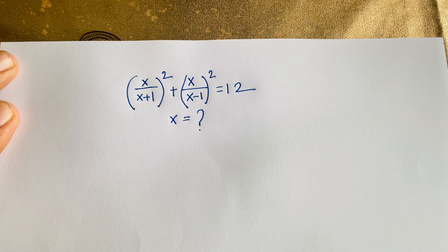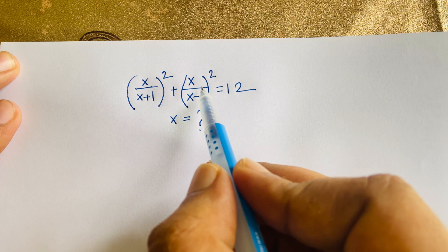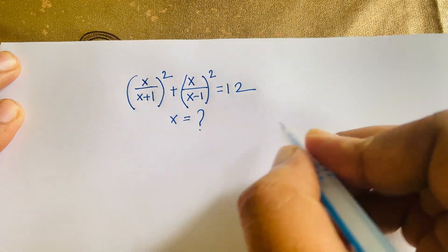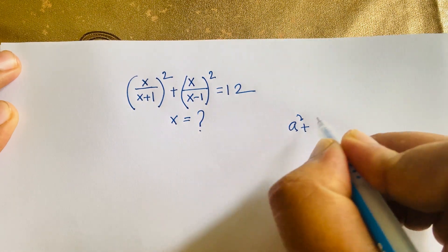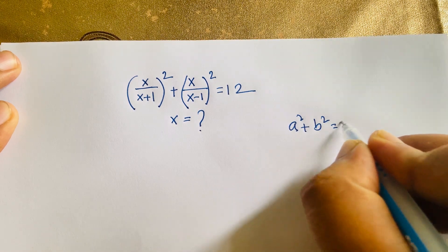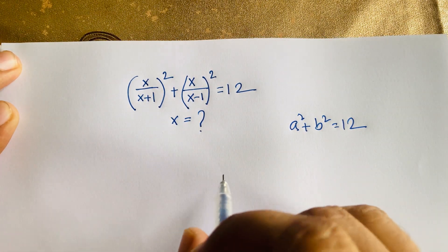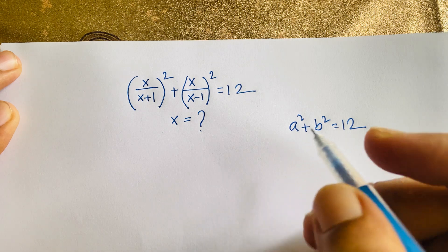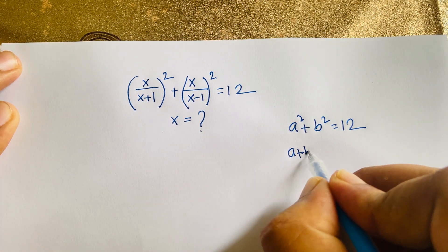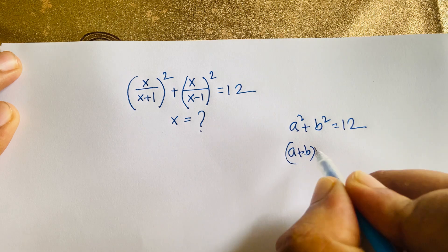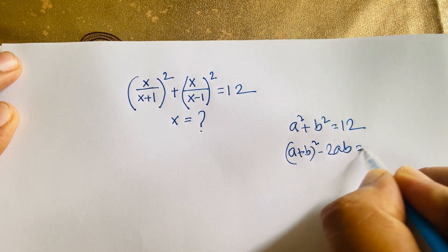First of all, if we let a = x/(x+1) and b = x/(x-1), then we have a² + b² = 12. We know the identity that a² + b² equals (a+b)² minus 2ab, so we can write (a+b)² minus 2ab is equal to 12.